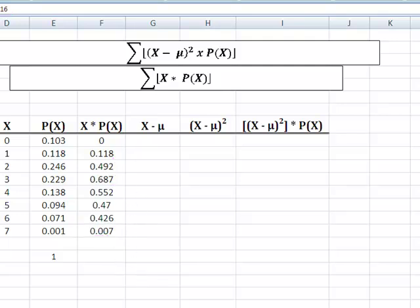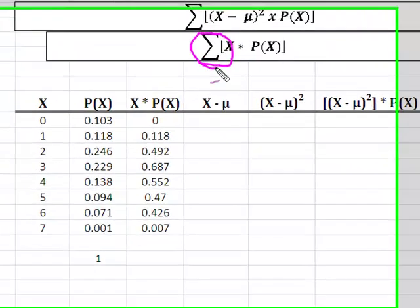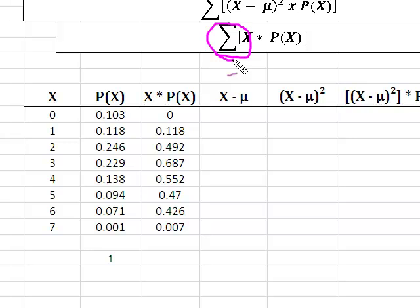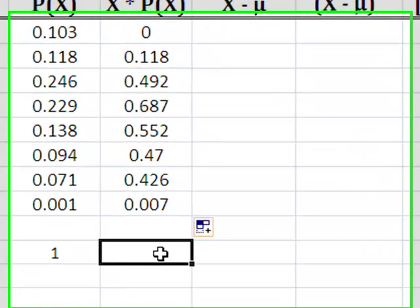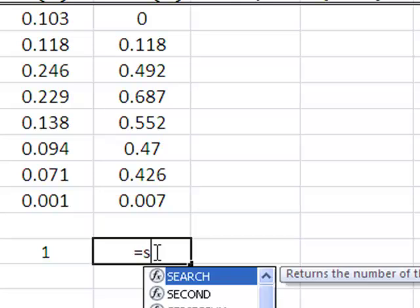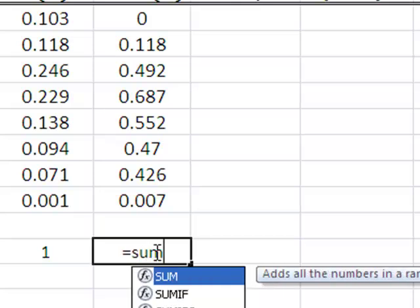So the formula tells me that the formula is actually the sum of X times the probability of X, so I know that the mean of the distribution is simply the sum or the total of everything that's in this column right here. Here again, lazy person, all I need to do is here I can just hit equals SUM, and it says adds all the numbers in a range of cells. If I click right there on FX,